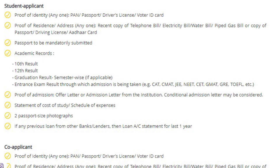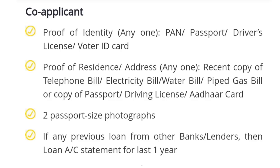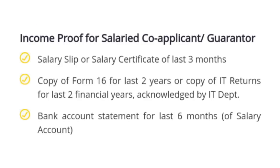For co-applicants — that is your parents or relatives — they need to submit proof of identity (PAN card, passport, driving license, or voter ID card), proof of residence or address (recent telephone bill, electricity bill, water bill, piped gas bill, passport, driving license, or Aadhaar card), two passport size photographs, and if any previous loan exists, the loan account statement for the last one year.